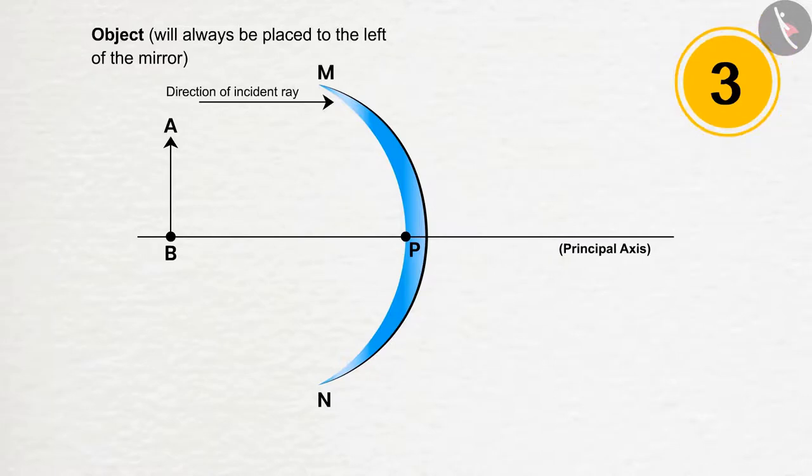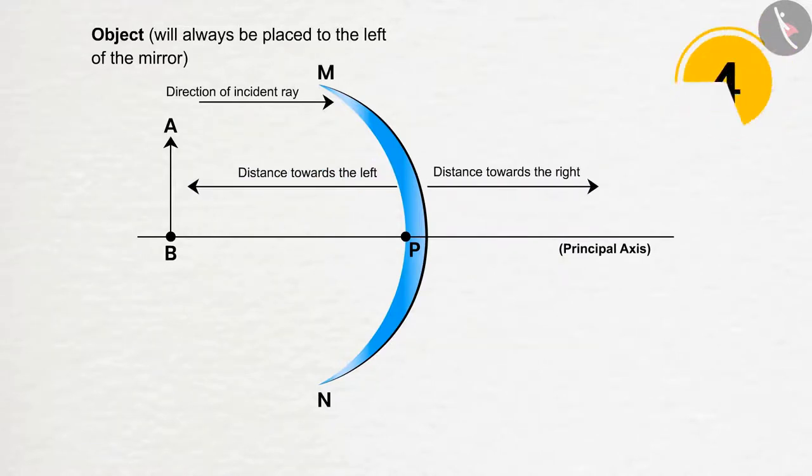3. All distances parallel to the main axis will be measured from the pole. 4. All distances to the right of the origin point will be considered positive, and all distances to the left will be negative.